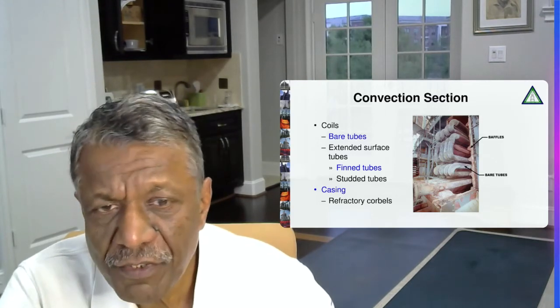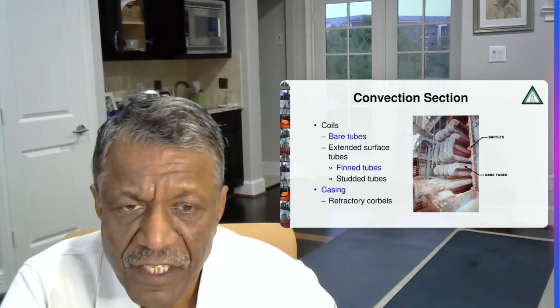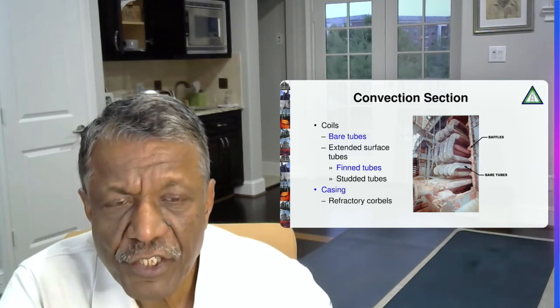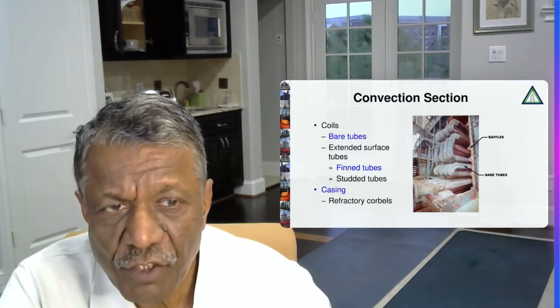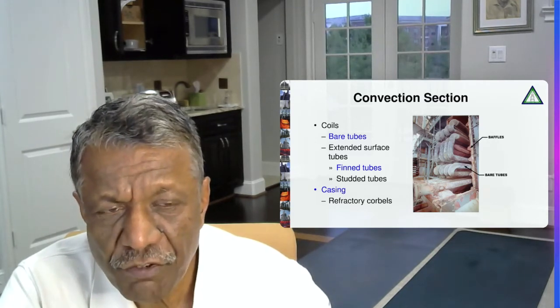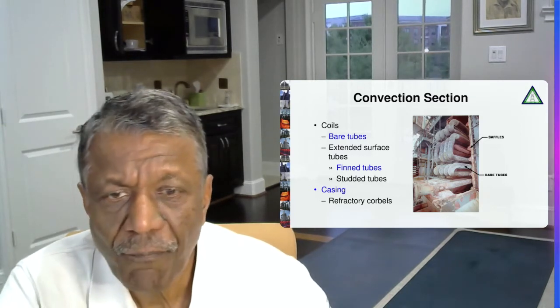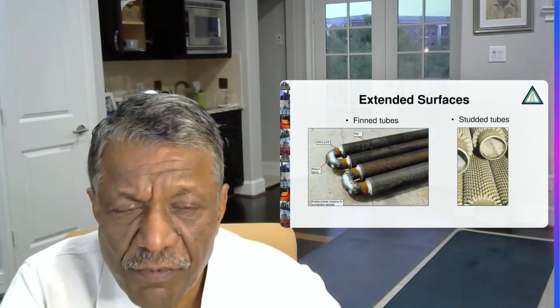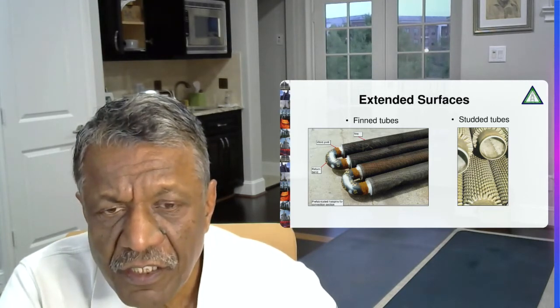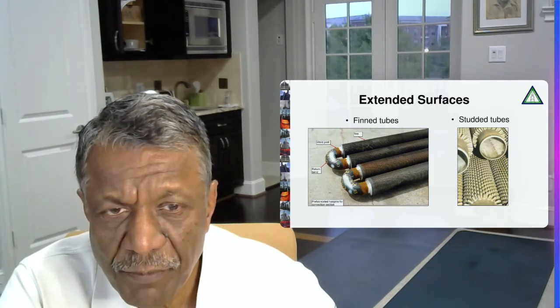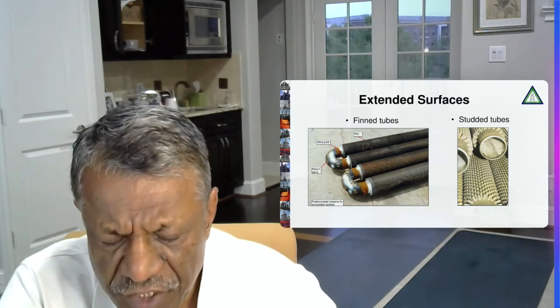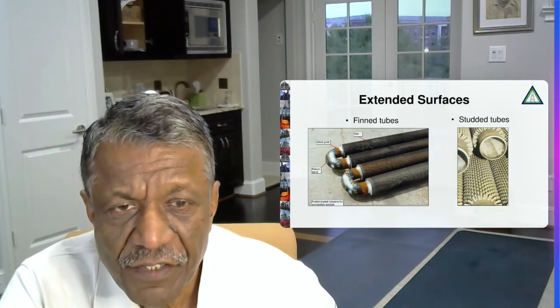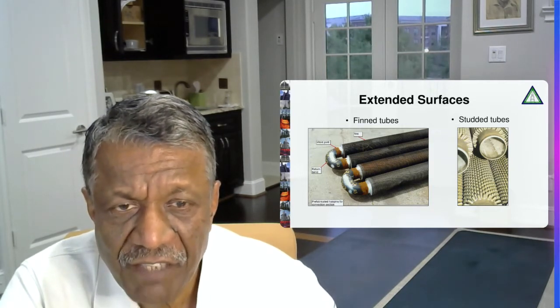The extended surface could be fin tubes or studded tubes, and then we have the steel casing on the outside and the refractory corbels. Refractory corbels or baffles are needed because we have the tubes arranged in triangular pitch. And because of the triangular pitch, since they are staggered, we need to put corbels in alternate rows on each side to prevent the flue gas bypassing. Here the fin tubes, you can see the fin tube and the studded tubes. The fin tubes are solid fins that is used in fire heater industry. Typically we use only up to 5 fins per inch and 1 inch height. Fins can increase the heat transfer area of the tube by anywhere between 6 to 10 times. So fins are very, very efficient. And because of fins, the convection section sizes have come down.